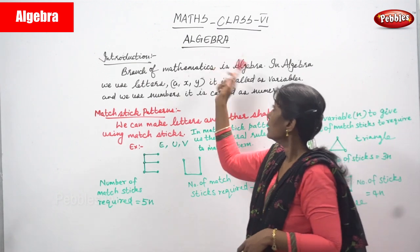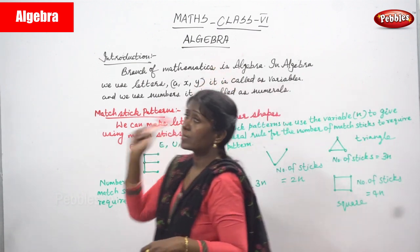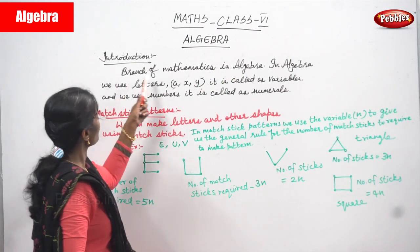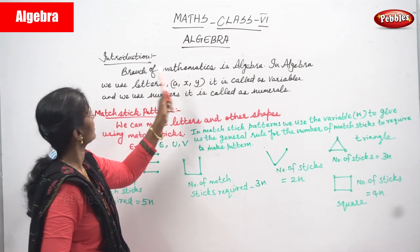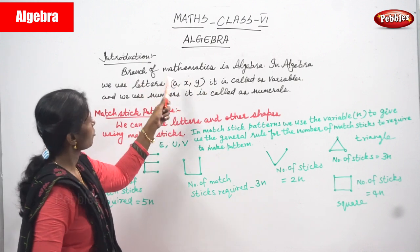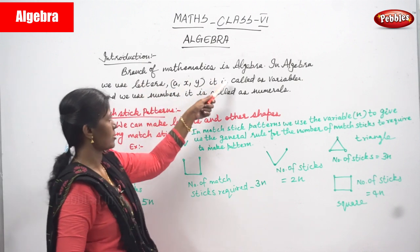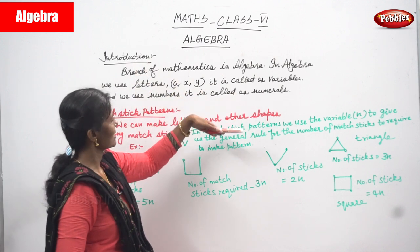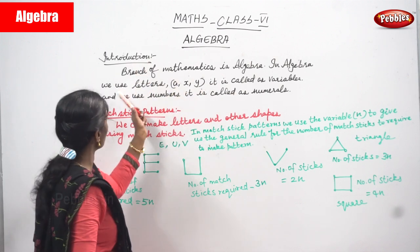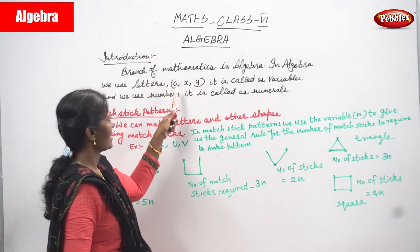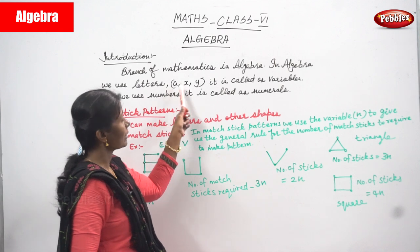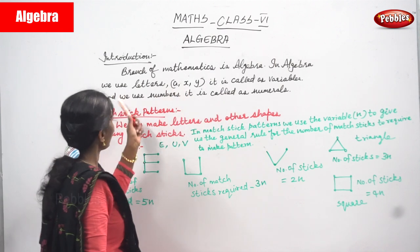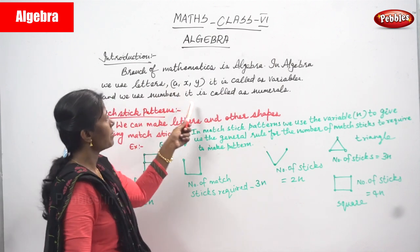Now we are going to see the last and final chapter: algebra. One of the branches of mathematics is called algebra. In algebra, we use letters like A, X, Y — all the alphabets — and these are called variables. We also use numbers, which are called numerals.